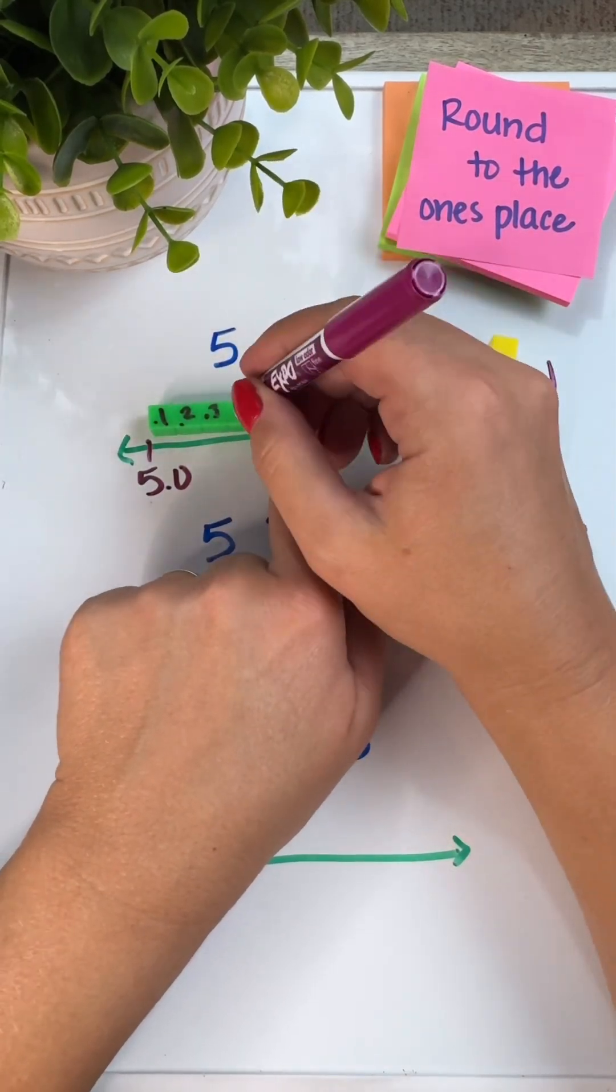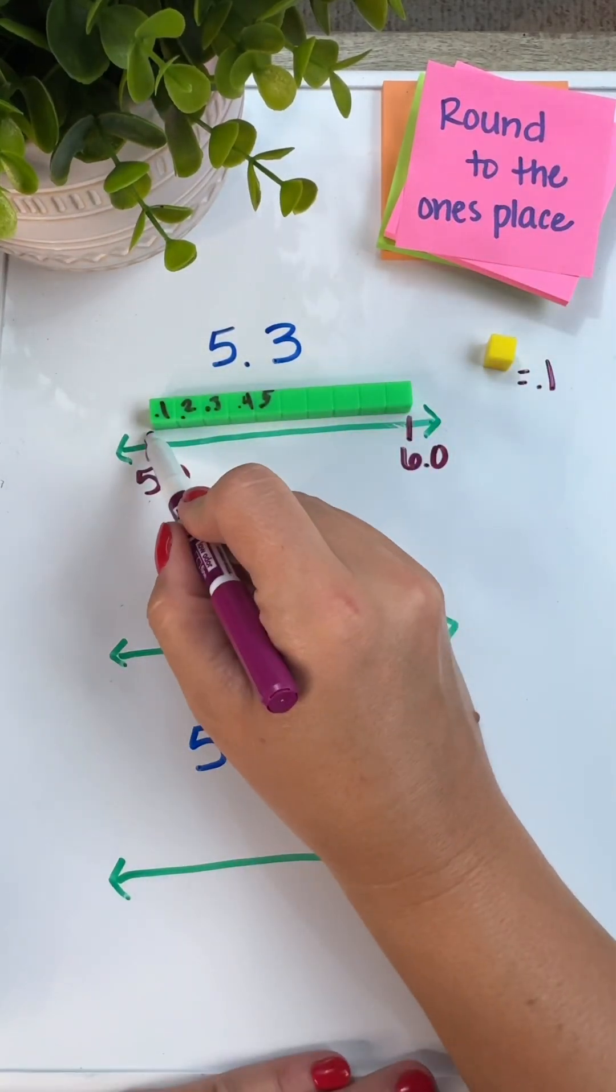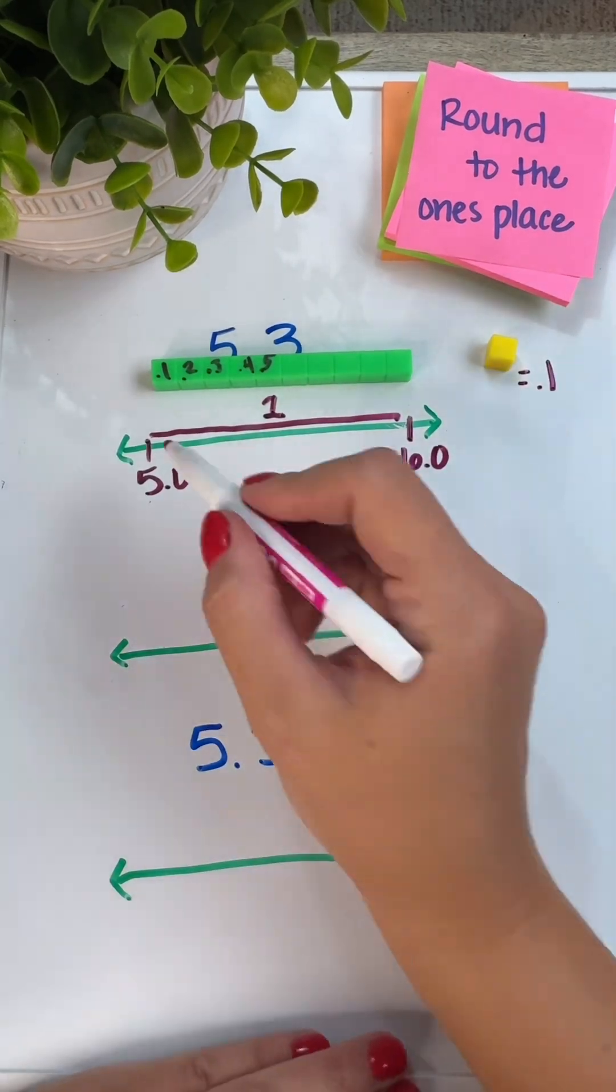So in this example, we're rounding to the ones place so that rod is representing one whole. However, each unit cube is representing one tenth.